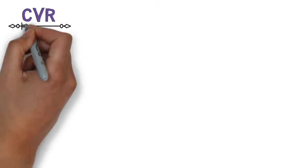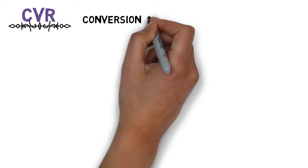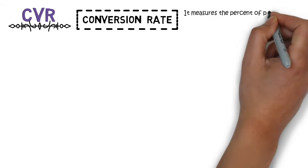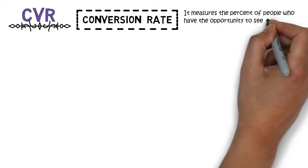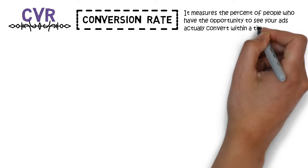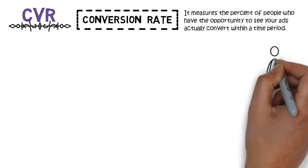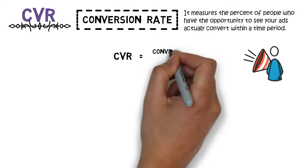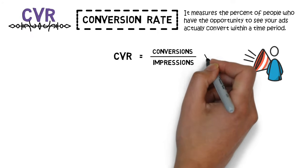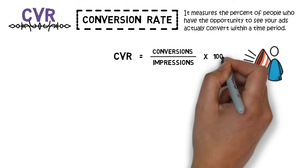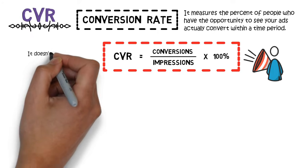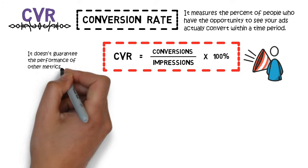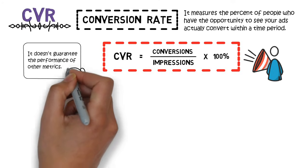Conversion rate, CVR. Similar to CTR, CVR measures the percent of people who have the opportunity to see your ads that actually convert or perform the desired actions you have determined for your campaign. It's calculated as conversions divided by impressions, then times 100%. Similar to CTR, a higher CVR doesn't always mean a lower CPA.